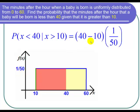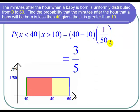So now I just calculate 40 minus 10 is 30. 30 over 50 reduces to 3 fifths.